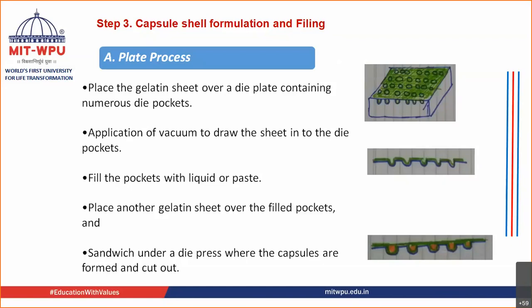In the third and most important step, the fill material — whether suspension, solution, liquid, or oil — is filled inside the capsule shell. This step will consume most of our lecture. This third step of filling involves three different processes. The first process is known as the plate process. My drawings are rough, but I've drawn them to help you understand since no images were available.